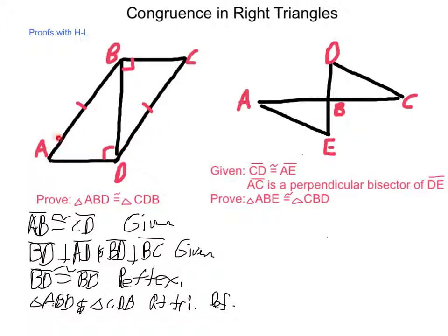The CD and AB sections are hypotenuses, and BD is congruent to itself, and that is the leg. So we have established that proof. I've just run out of room for being able to write it.